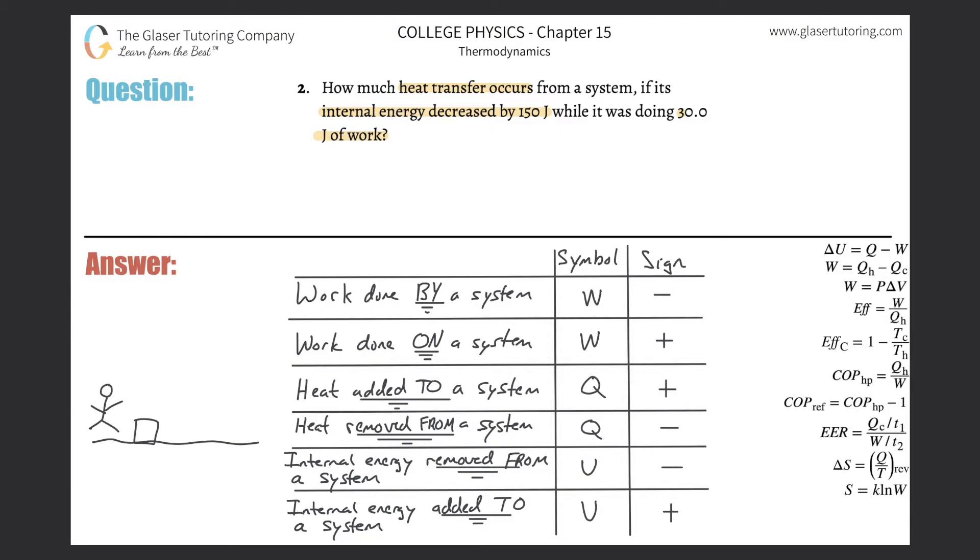And you want to lift this block up onto a table. So you're going to take the block and you're going to lift it up and you're going to put it on top of the table. So from the perspective of the block, work was being done on it. If I call the block the system, work was done on this particular system. Who did the work? You did the work. So if I call you the system, work was being done by this system on this system.